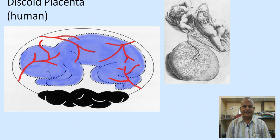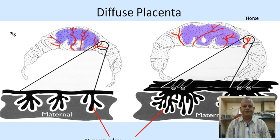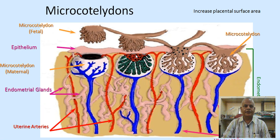This is a discoid placenta. You can see here the umbilicus and the discoid placenta attached to the uterus. This is the diffuse placenta, this is the microcotyledonary type, and these are the microcotyledons formed in the maternal endometrium — seen in the horse and the pig. The microcotyledons invade the uterine endometrium and increase the placental surface area.